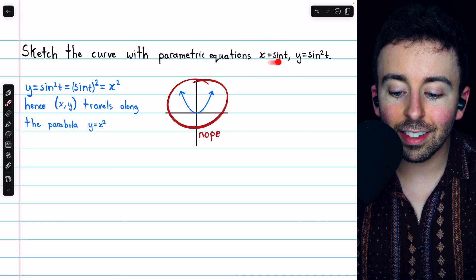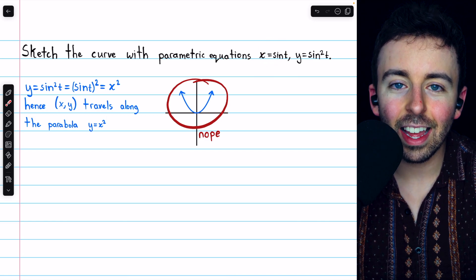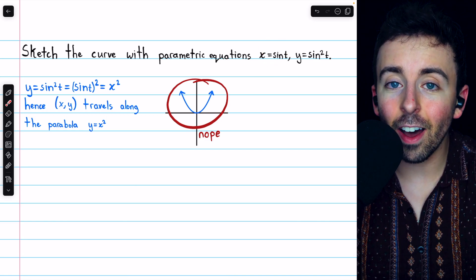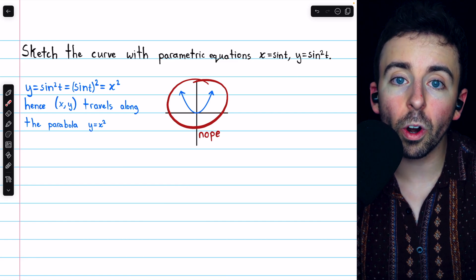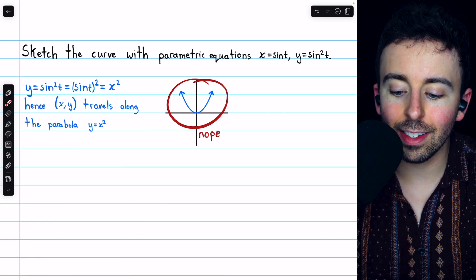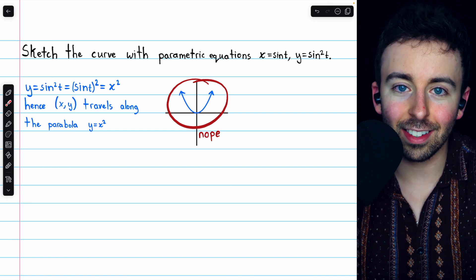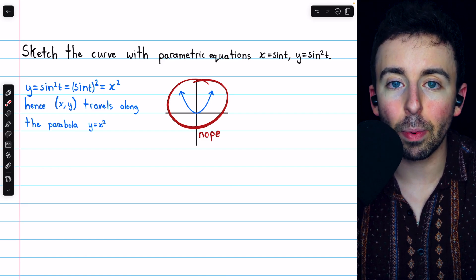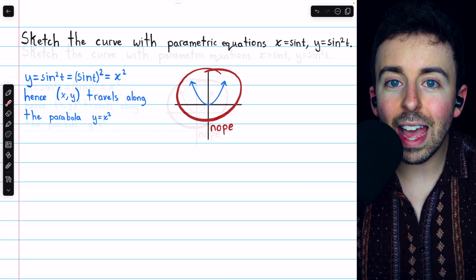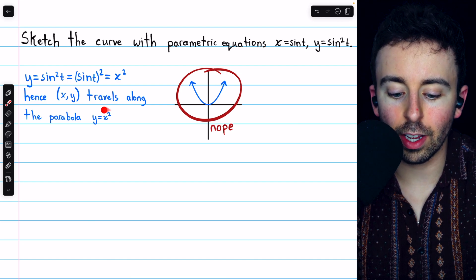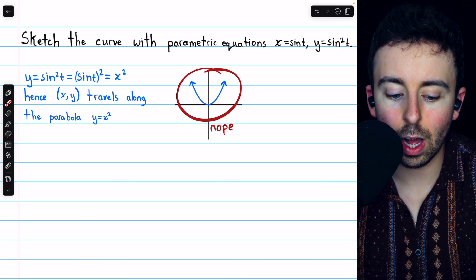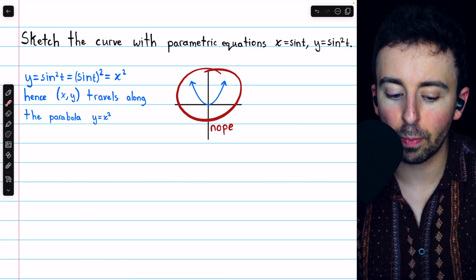Notice that x is equal to sine t, and we know that sine cannot exceed positive or negative 1. Similarly, y is sine squared t, and sine squared can't exceed positive 1 either. So, we have to consider those restrictions on the values for x and y, based on their parametric descriptions.